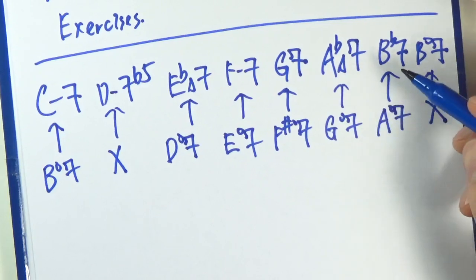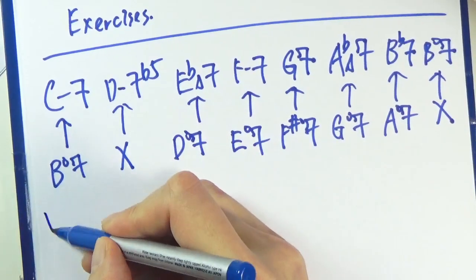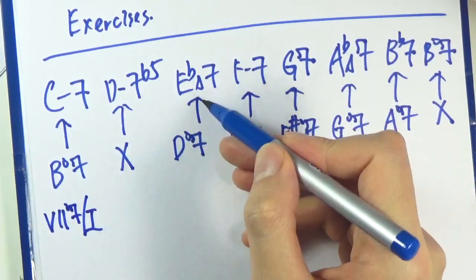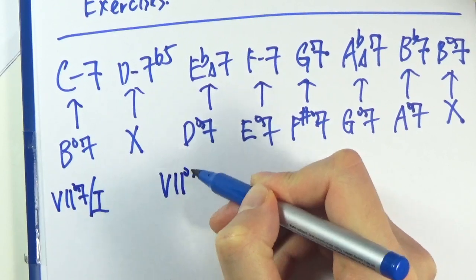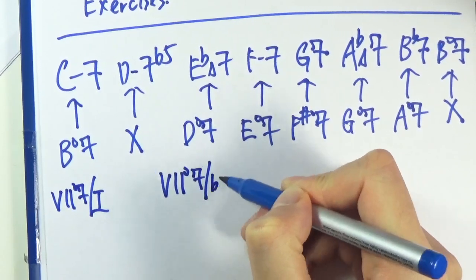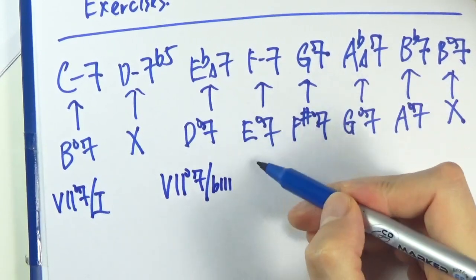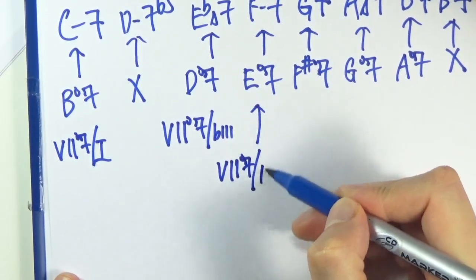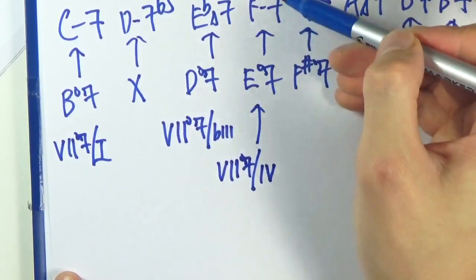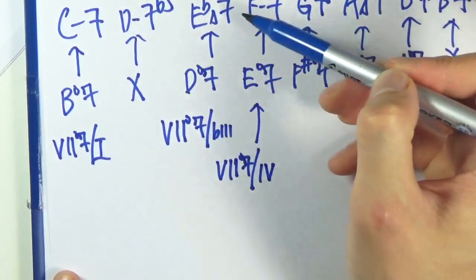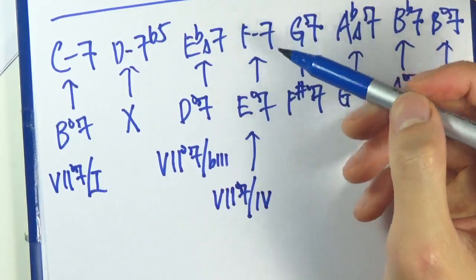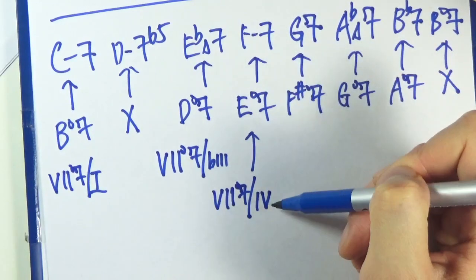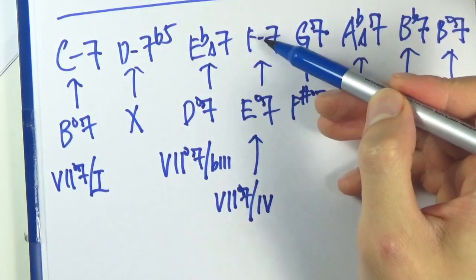So let's analyze them. So this is the 7, diminished 7 of 1. Here we have diminished 7 of flat 3. So this is the 7 diminished 7 of 4, so we're treating each of these chords as if they were 1 chord. And this is the 7th of this chord here, hence the 4 here, because this one is the 4 chord.